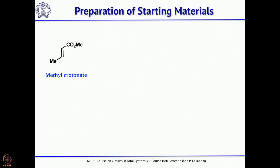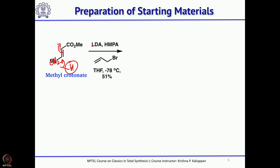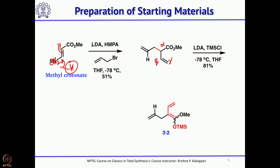Now let us see how the forward synthesis took place. He started with commercially available methyl crotonate. Treatment with LDA picks up the gamma proton and generates an anion which is quenched with allyl bromide at the alpha position, giving this alpha-beta-gamma unsaturated ester. This proton at alpha is still acidic, so you can generate the anion and quench with TMS chloride to give the corresponding starting diene required for the Diels-Alder reaction with juglone.